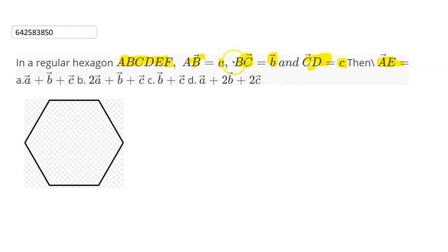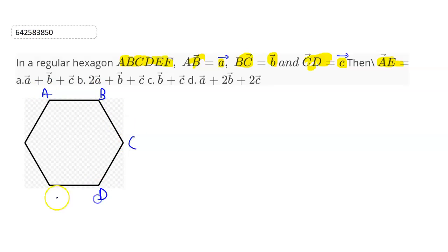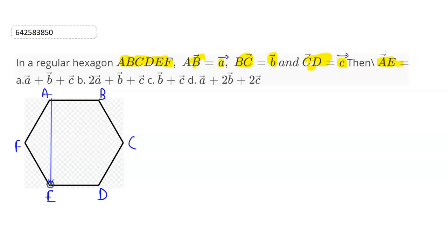So this is a vector and this is c vector. Let us draw the hexagon — so this is ABCDEF. AE vector is this vector, originating from this vertex.